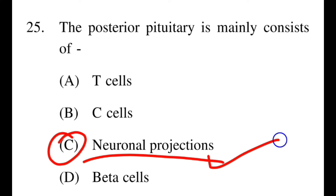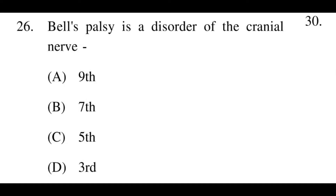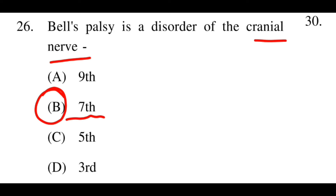Next question: Bell's palsy is a disorder of which cranial nerve? Options: A: 9th, B: 7th, C: 5th, D: 3rd. The right answer is B, the 7th cranial nerve. It is due to a defect in the 7th cranial nerve — the facial nerve — that Bell's palsy occurs.